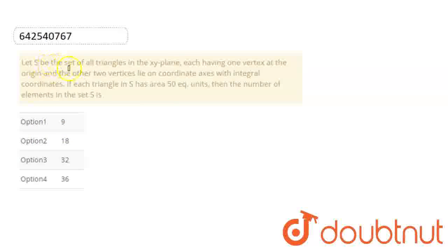Let S be the set of all triangles in the x-y plane, each having one vertex at the origin and the other two vertices on the coordinate axes with integral coordinates. If each triangle in S has an area of 50 square units, then the number of elements in the set S is: